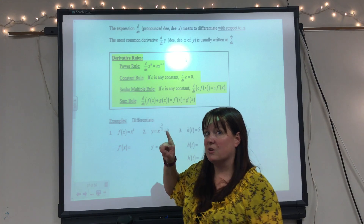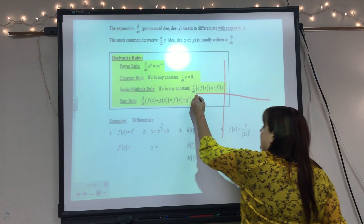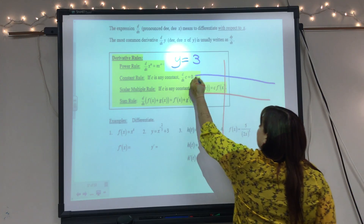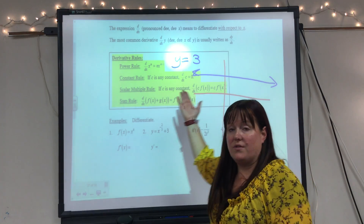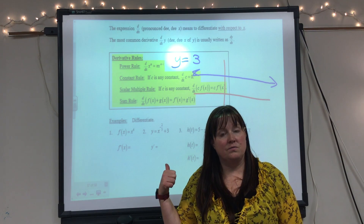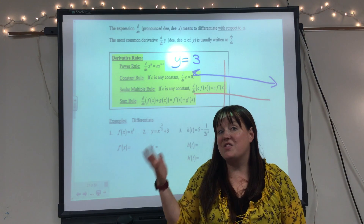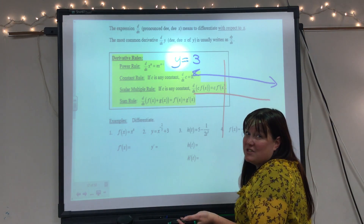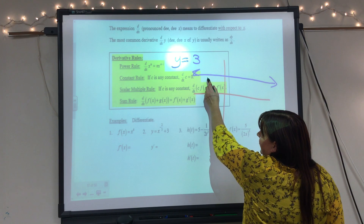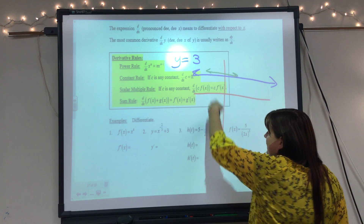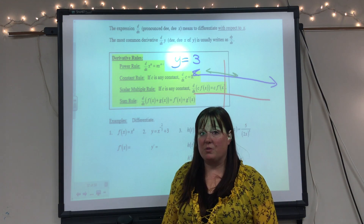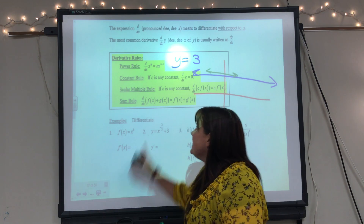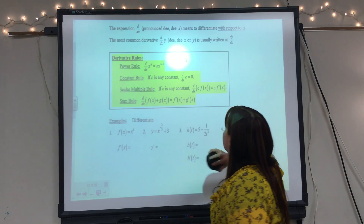If we have a constant and take the derivative it's always zero — here's why. If y equals 3, that's a constant, and when you graph it you get a horizontal line. What's the rate of change of that line? It isn't changing at all, so its rate of change is zero. The tangent line to a horizontal line is also horizontal, with a slope of zero. A constant never changes, so its derivative is always zero.